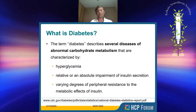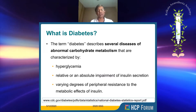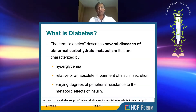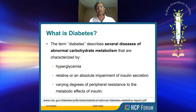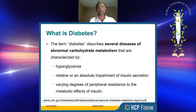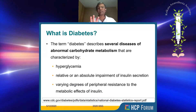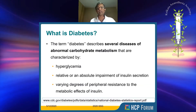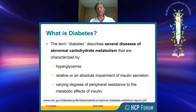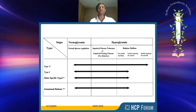What is diabetes? The term essentially describes several diseases of abnormal carbohydrate metabolism, characterized — and this is a textbook definition also found at the CDC — by hyperglycemia, and a relative or absolute impairment of insulin secretion, along with varying degrees of peripheral resistance to the metabolic effects of insulin. These three things are essentially part of this disease conundrum.